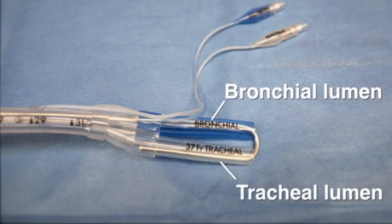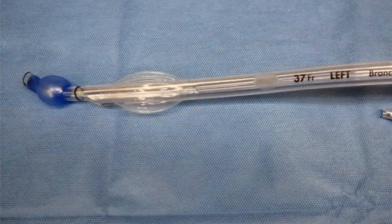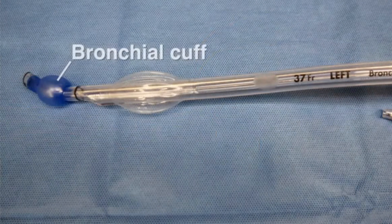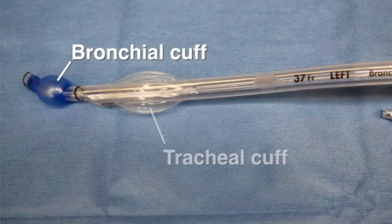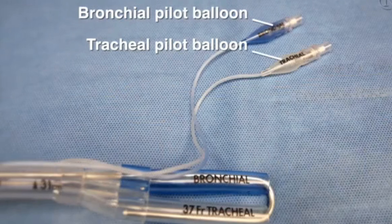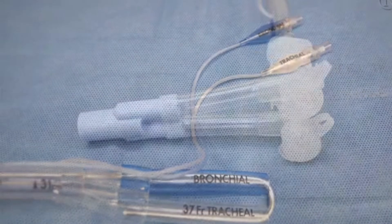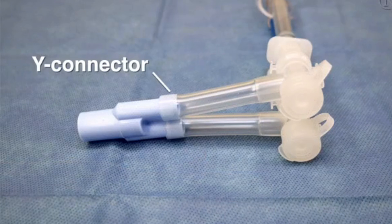The tracheal lumen is designed to be placed above the carina. Each lumen has a color-coded cuff, which is often blue on the bronchial lumen and clear on the tracheal lumen. Each lumen also has a color-coded pilot balloon. A Y connector connects both lumens to the breathing circuit.